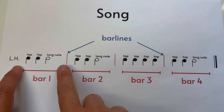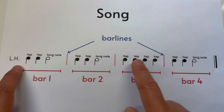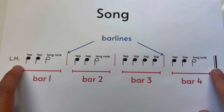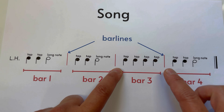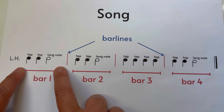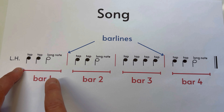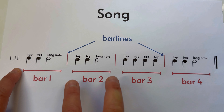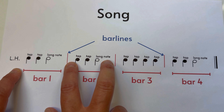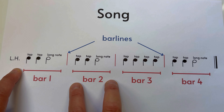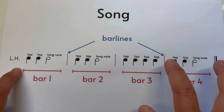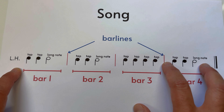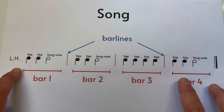As we think of them as fences and houses: this is house number one, bar number one. House number two, bar number two. House number three, bar number three. House number four, bar number four.